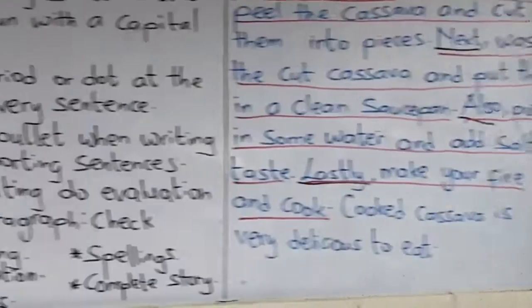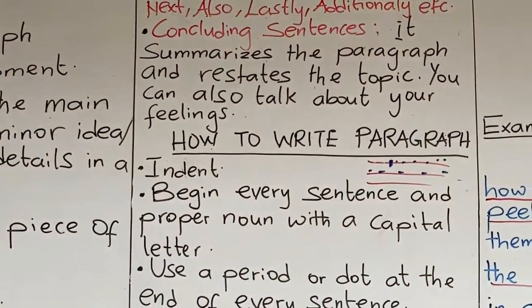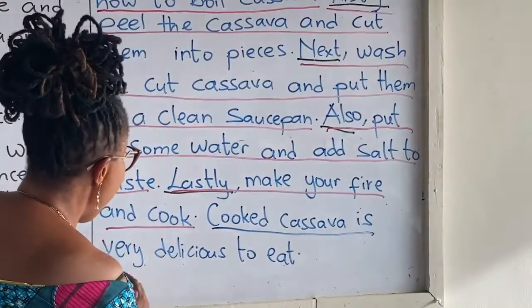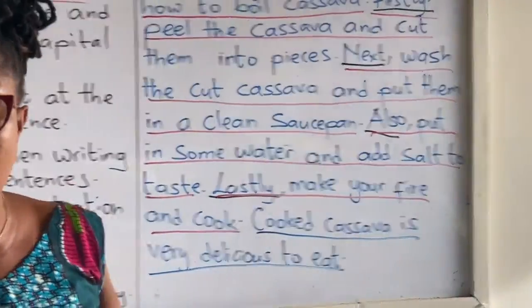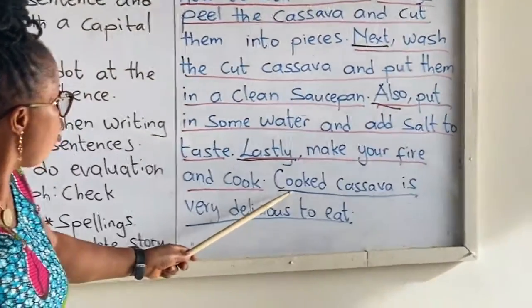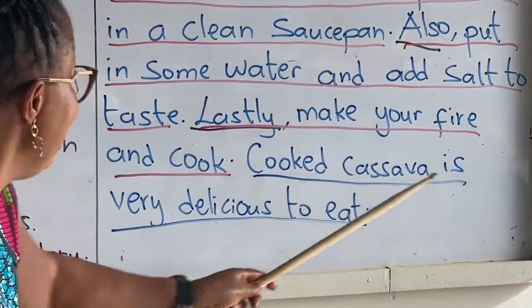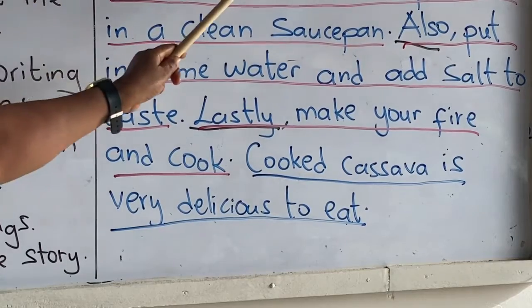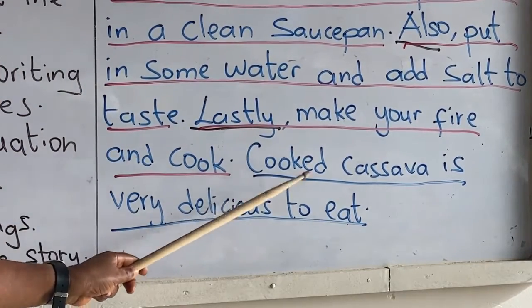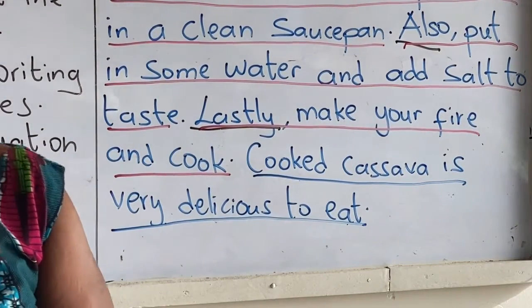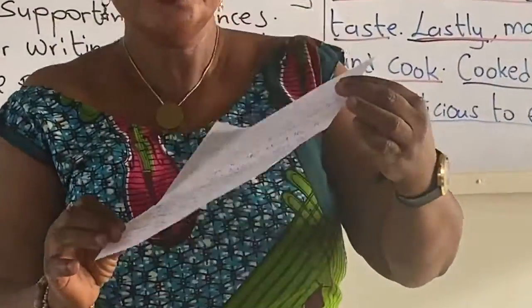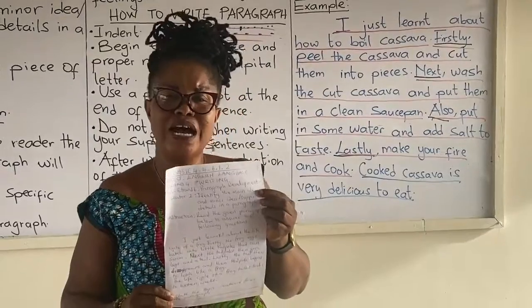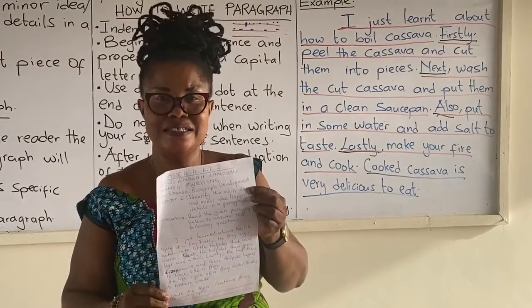Now we are going to look for our concluding sentence, which talks about feelings. 'Cooked cassava is very delicious to eat' — that is our concluding sentence. So in this paragraph, we have one topic sentence, four supporting sentences, and one concluding sentence. I will upload this paragraph online — download and answer the questions that follow. Subscribe to our YouTube channel. Bye-bye.